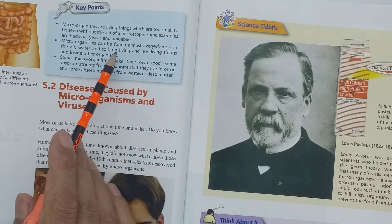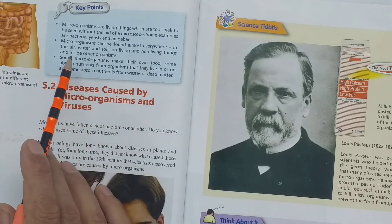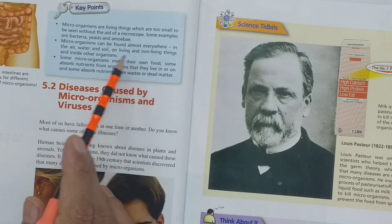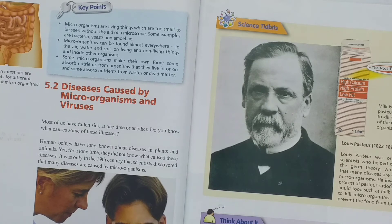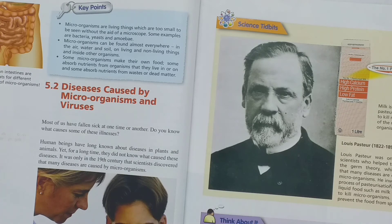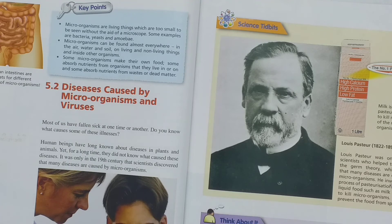Microorganisms can be found almost everywhere: in the air, water, and soil; on living and non-living things; and inside other organisms. Some microorganisms make their own food. Some absorb nutrients from organisms that they live in or on, and some absorb nutrients from waste and dead matter.